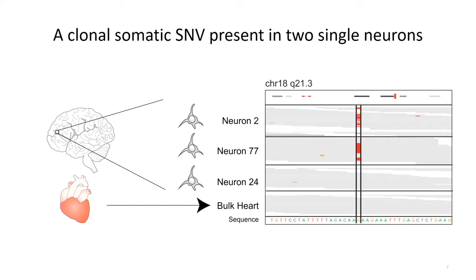From those experiments we can find evidence of mosaic mutations in the human brain. Here I'm showing data from four samples from one normal 17-year-old individual — whole genome sequence data from the bulk heart mapping to the q-arm of chromosome 18. All reads are gray, perfectly matching the reference genome. The same is true for neuron 24, isolated from this individual's prefrontal cortex. But for two other neurons isolated from the same small 50-milligram sample of tissue, both appear heterozygous for a thymine instead of a guanine, suggesting this is a somatic mutation that occurred in some progenitor and was inherited upon terminal differentiation.